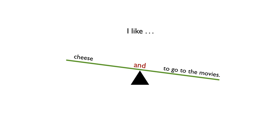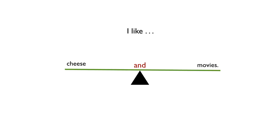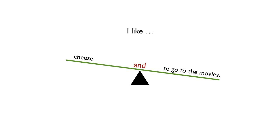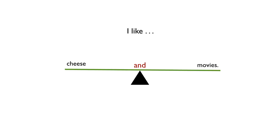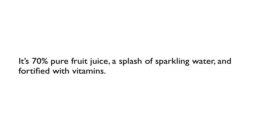It's a good rule of thumb that when you use a coordinating conjunction to create compound parts of your sentence, the two aspects of that coordination should be grammatically parallel. If we change it to 'I like cheese and movies,' now we have two nouns. In the original, 'to go to the movies' is an infinitive form — a verb phrase — while 'cheese' is a noun, so they were not parallel. Now they are.